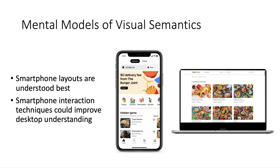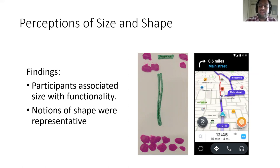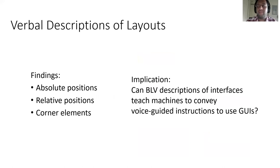Our participants had approximate notions of size and shape. They associated size with functionality — for example, saying "this element is so annoying so I'll put it two sticky notes wide." They used straight lines of wiki sticks to represent links and circular blobs of playdough to represent buttons. Participants also taught us about describing user interfaces: they used absolute positions like XY coordinates, reference points like edges and corners, and locations of a few elements to describe other elements. This presents interesting implications for how we might teach voice interfaces to describe UIs.